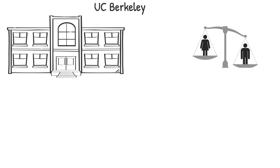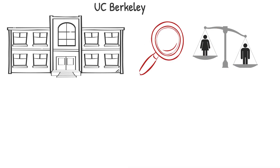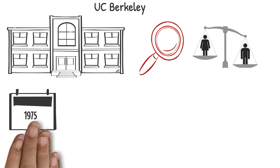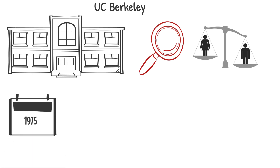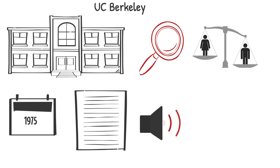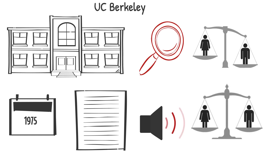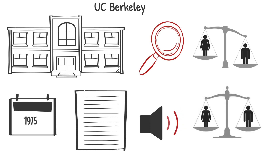The reputation of the university was at risk. UC Berkeley conducted an extended investigation, trying to figure out the truth. And in 1975, UC Berkeley published a detailed research paper announcing that there is totally no women discrimination in UC Berkeley.